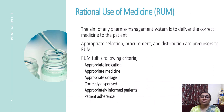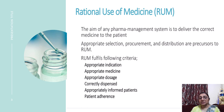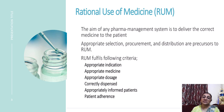Some criteria for rational use of medicine include appropriate selection of drug, procurement, and distribution as precursors. The criteria are: appropriate indication — we have a diagnosis before prescribing; appropriate medicine chosen in appropriate dosage; correctly dispensed; and after dispensing, we must inform and instruct the patient on every aspect of the drug, then follow up the patient for adherence.